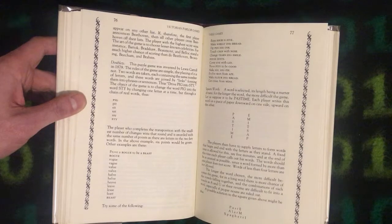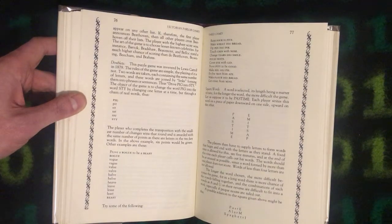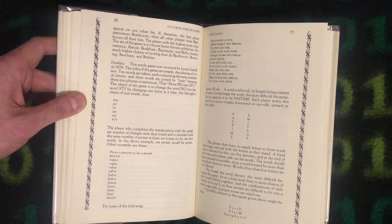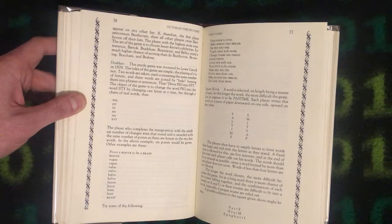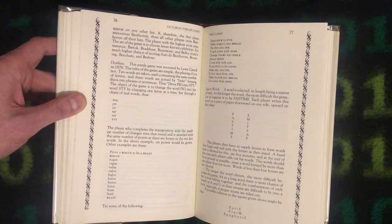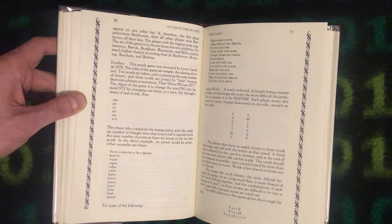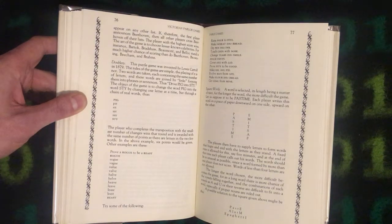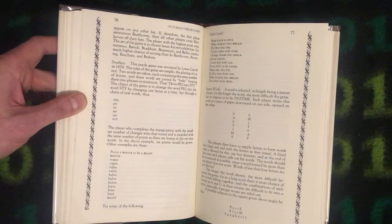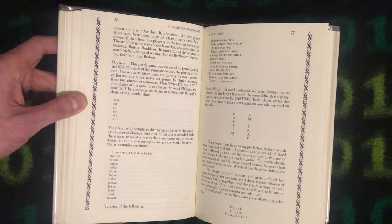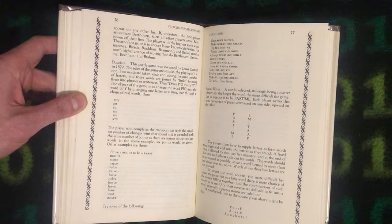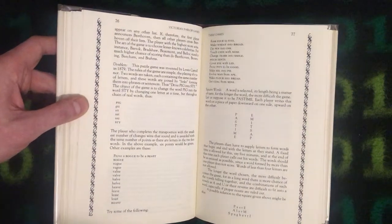Prove a rogue to be a beast. Rogue, vogue, vague, value, valve, halve, helve, heave, leave, lease, least, beast. Try some of the following.